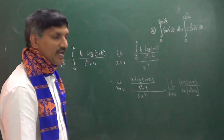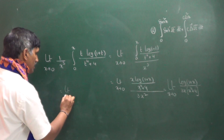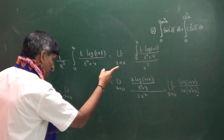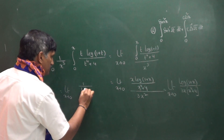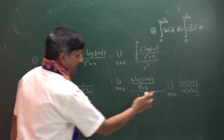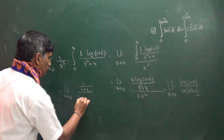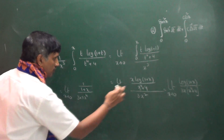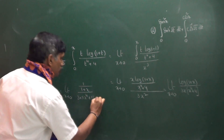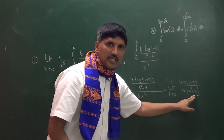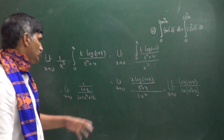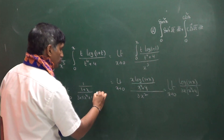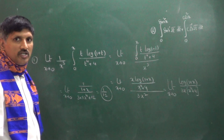So we apply L'Hôpital's rule again. The differentiation of ln(1 + x) is 1/(1 + x). The denominator differentiates to give 3·(x · 5x⁴) + 3·(x⁴ + 4) — expanding: 15x⁴ · x + 12, and the differentiation of 12x is 12. Applying the limit with x = 0, we get the answer 1/12. This is the previous year's IIT question.